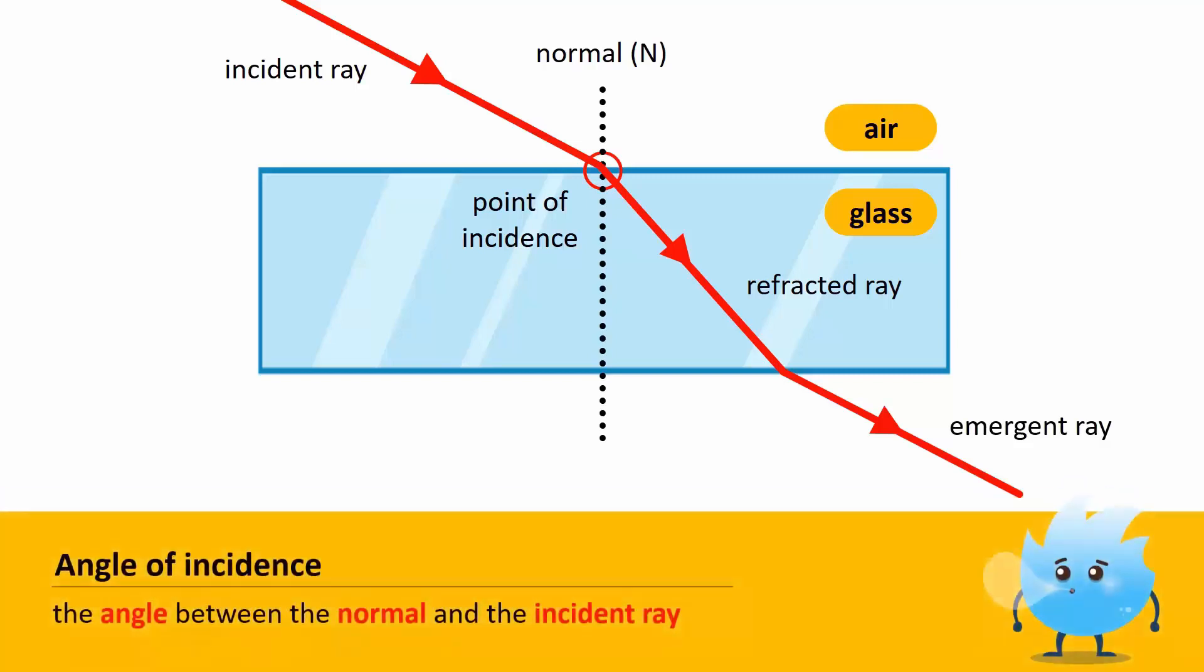The angle between the normal and the incident ray is the angle of incidence. It is denoted by the letter I.